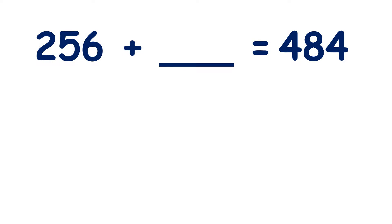We have 256 plus something equals 484. So how can we find our missing number? Well, we have a number family triangle because we know that 256 plus something gives us 484.